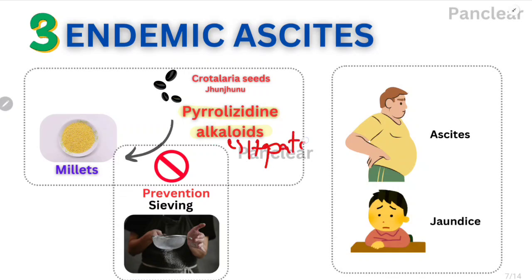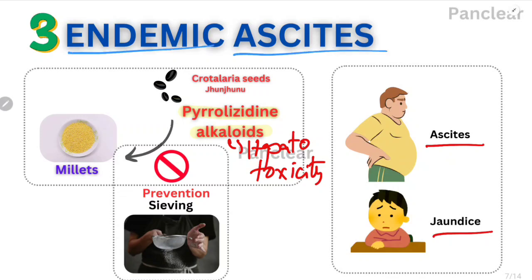Because of liver toxicity, if we come to a liver failure patient — a DCLD case — the two classical features of liver disease are ascites and jaundice. Therefore, this condition is called endemic ascites. When millets are contaminated with Crotalaria seeds, there is endemic ascites.